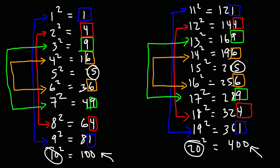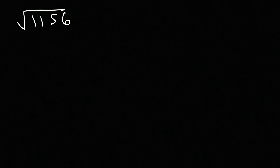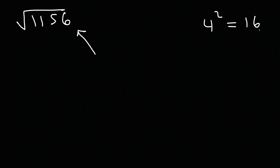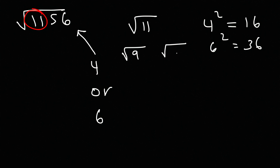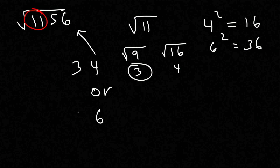Now let's apply this to the square root of 1156. The first thing you want to do is look at the last digit, the 6. We know that numbers ending in 4 or 6 give a last digit of 6 when squared — 4 squared is 16, 6 squared is 36. So the answer must end in 4 or 6. Now look at the first two digits: the square root of 11. That is between the square root of 9 and the square root of 16, so between 3 and 4. We pick the lower value, 3. So our answer is either 34 or 36.